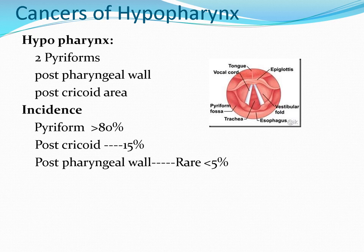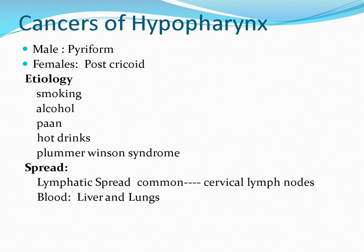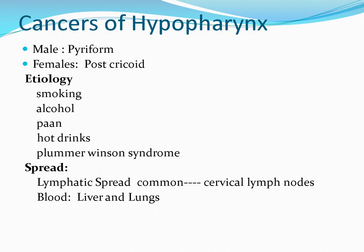Cancer of the hypopharynx: the hypopharynx has three parts — two pyriform sinuses, the posterior pharyngeal wall, and the post-cricoid area. Incidence in the pyriform sinuses is more than 80%, post-cricoid is 15% and more common in females. Posterior pharyngeal wall tumors are rare and usually seen in males. Post-cricoid tumor is strongly associated with Plummer-Vinson syndrome. Etiology includes smoking, alcohol, pan, hot drinks, and Plummer-Vinson syndrome.